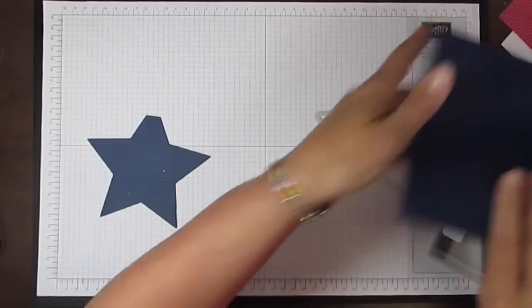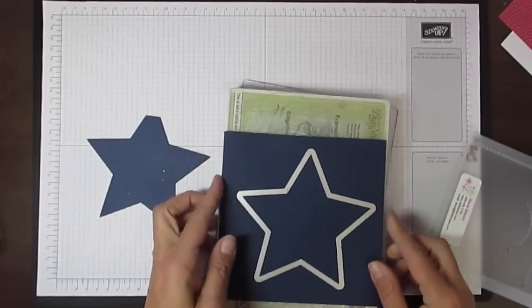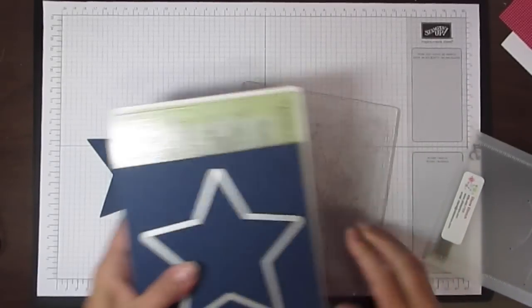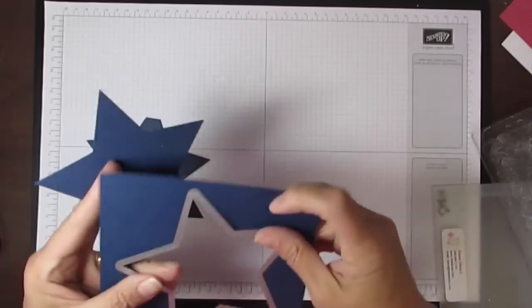The next thing I'm going to do is take another piece of Night of Navy and that large star, line that up also on my magnetic plate, and run this through the big shot. Then I have a star.